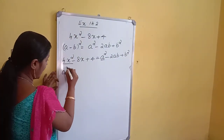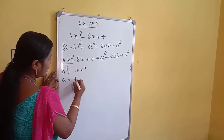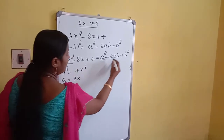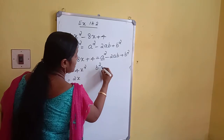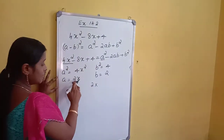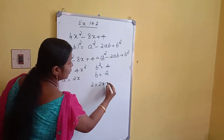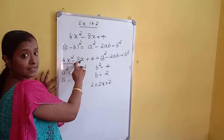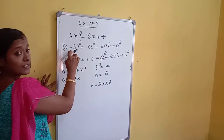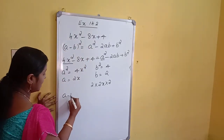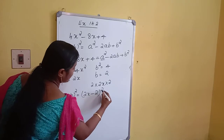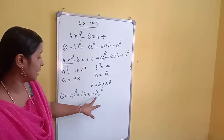A squared equals 4X squared, so A equals 2X, since 2X whole square equals 4X squared. B squared equals 4, so B equals 2. For 2AB: 2 into A means 2X, and B means 2, so 2 into 2X into 2 equals 8X, giving minus 8X. All terms match, so the required factorization is A minus B whole square equals 2X minus 2 whole square.